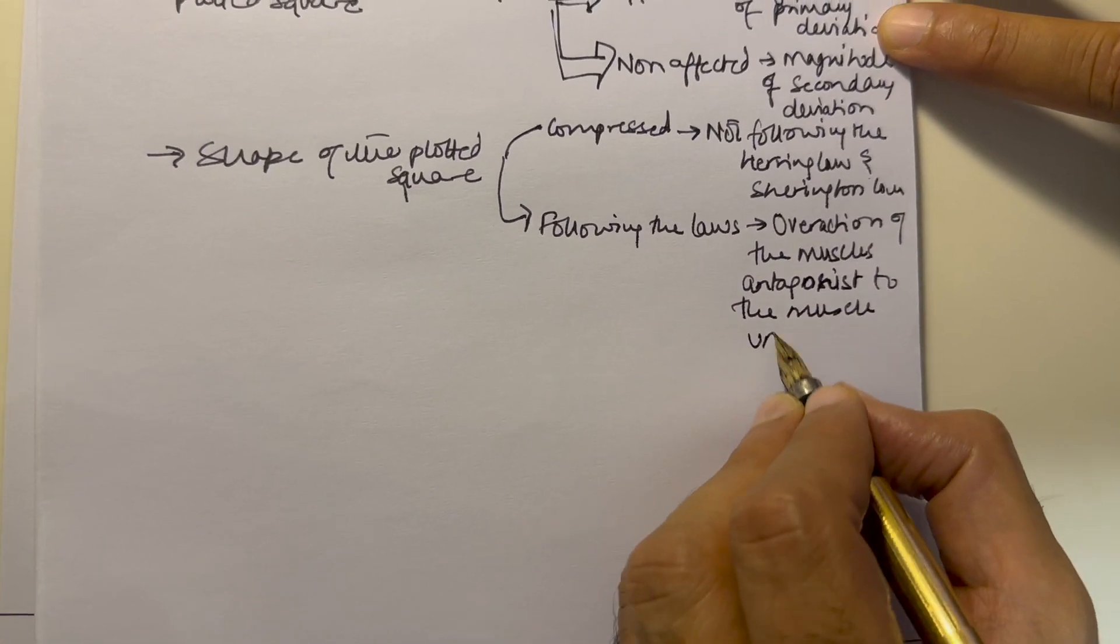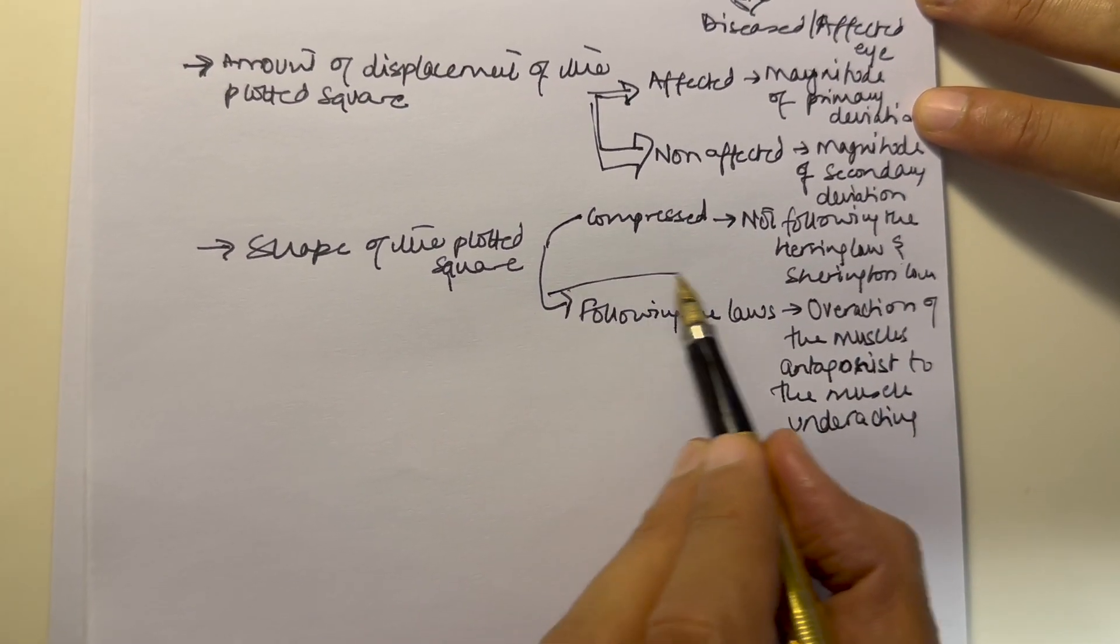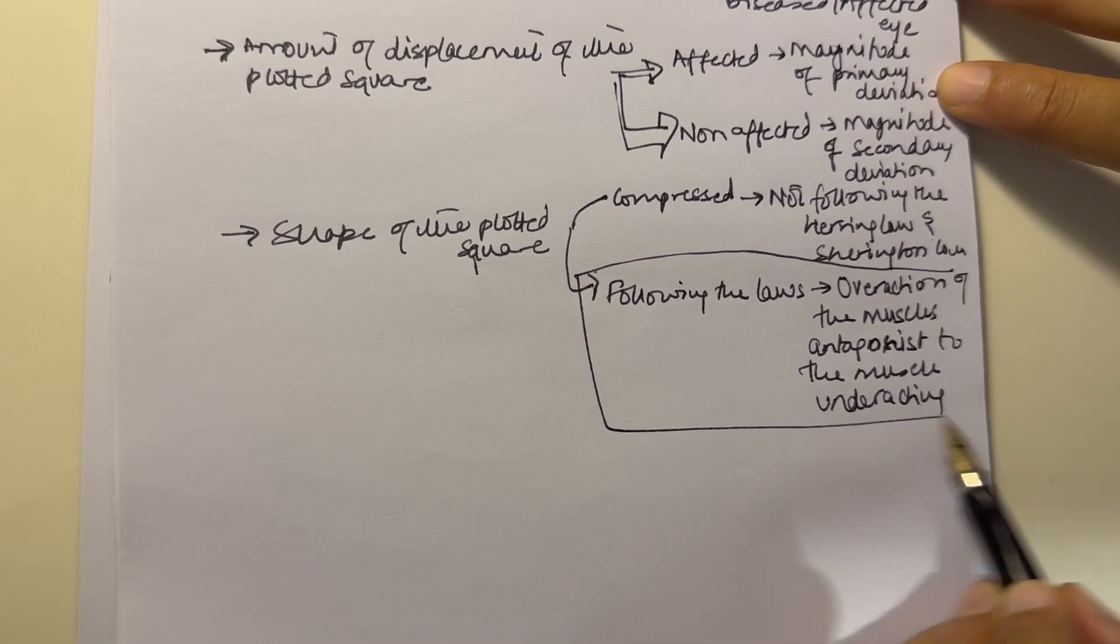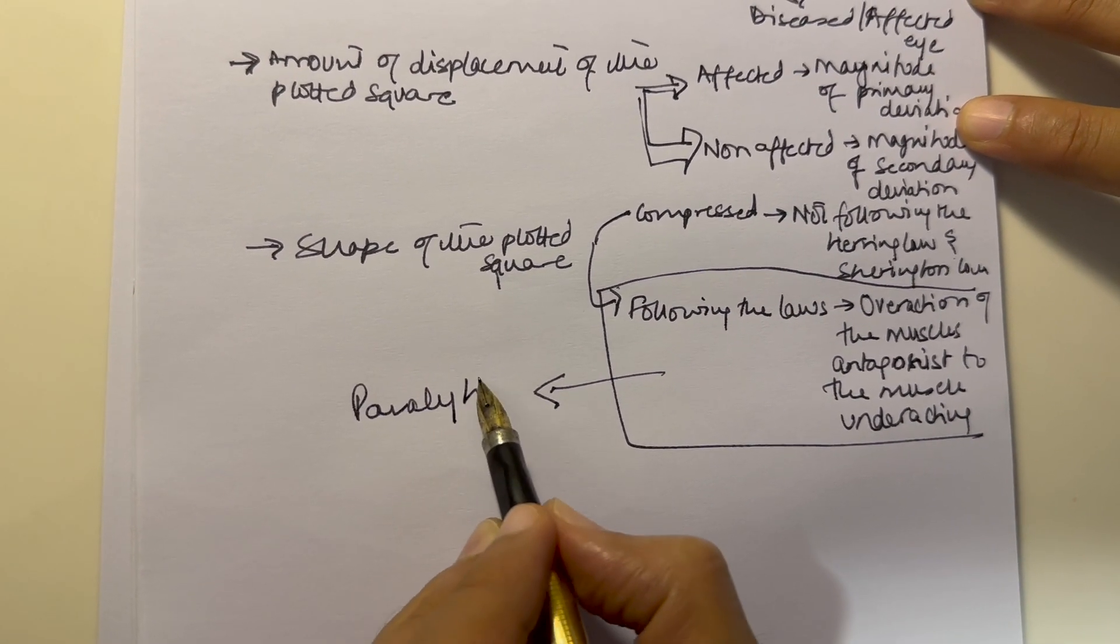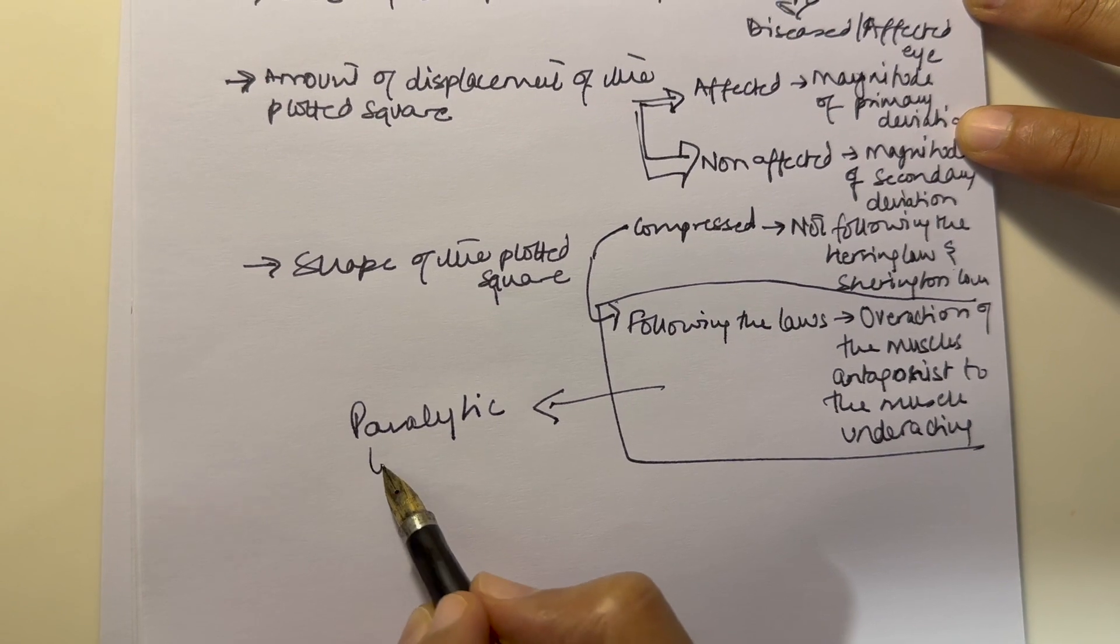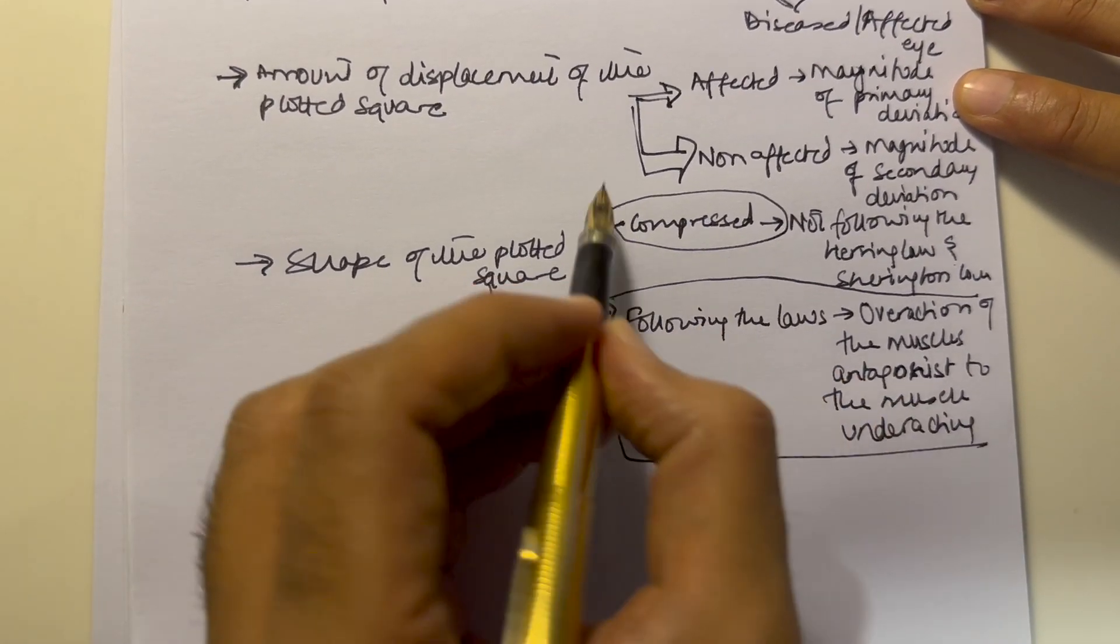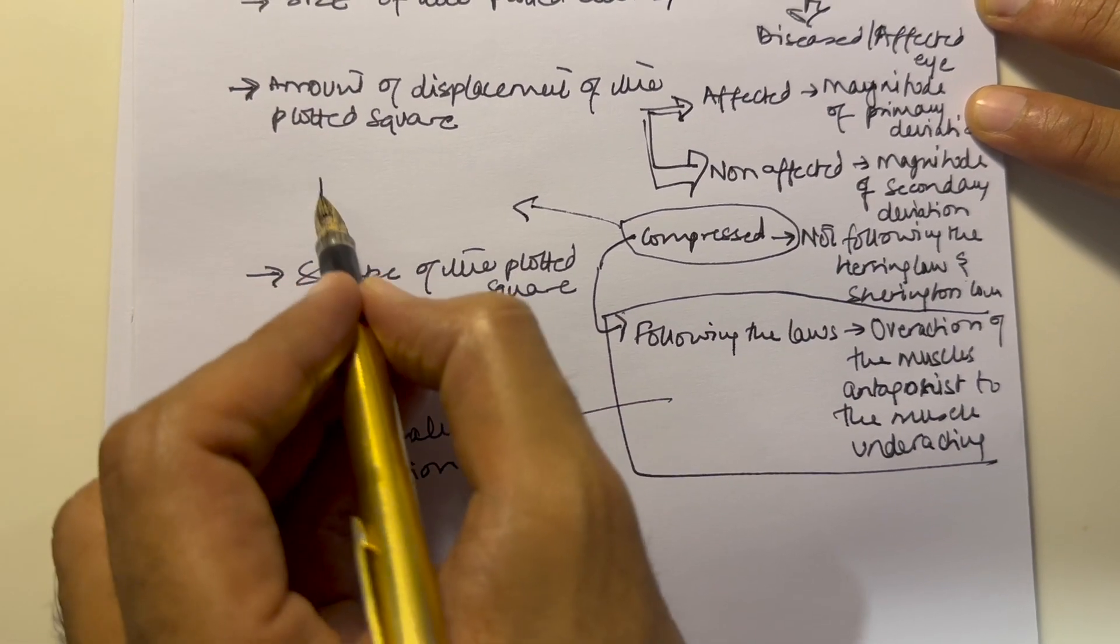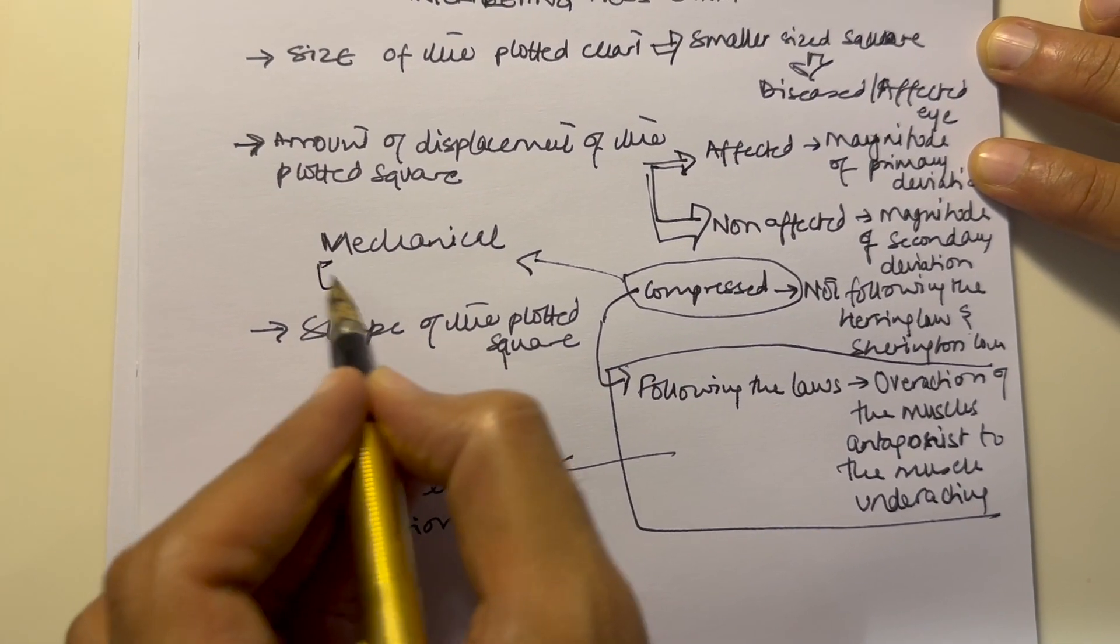If this is the case, this will show paralytic lesion which you are dealing with. But if you have compression, this will tell you that there is some mechanical problem of the extraocular muscle.